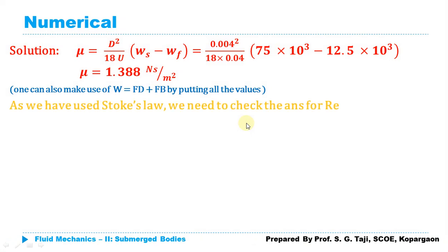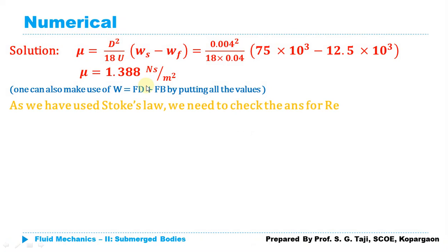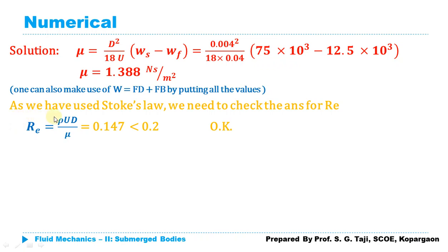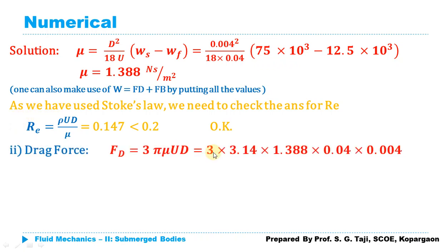We verify the assumption by calculating Reynolds number: Re = ρUd/μ. Putting in the values, Re = 0.147, which is less than 0.2. So our assumption that Stokes law is applicable holds good and our answer for μ is correct.